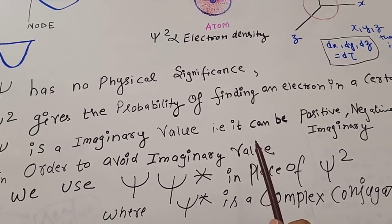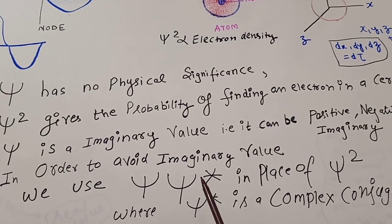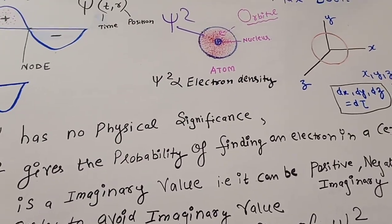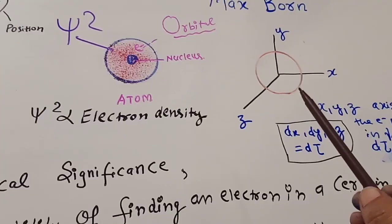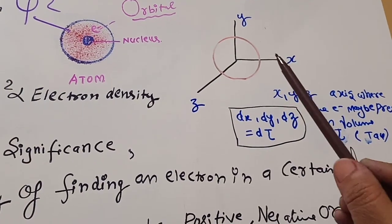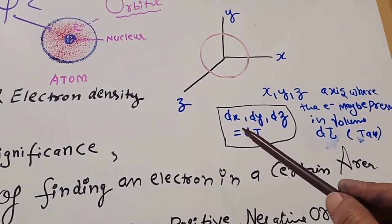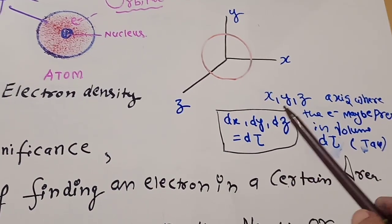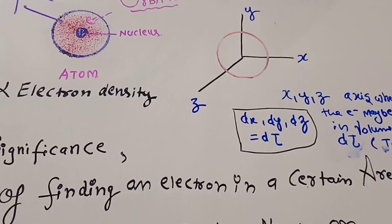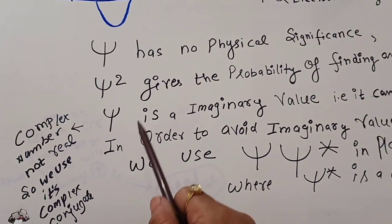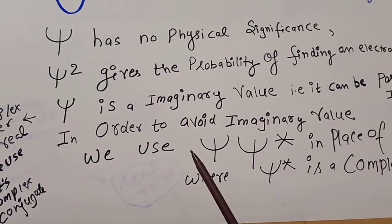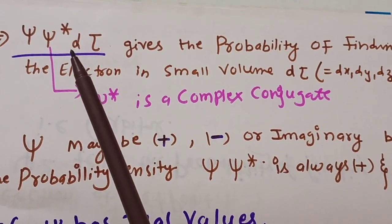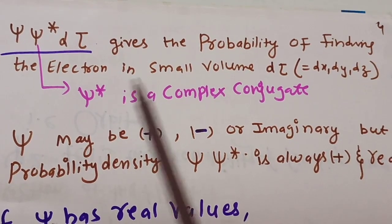To avoid imaginary values, we use psi and psi-star, where psi-star is the complex conjugate of psi. If the electron is present around the nucleus in a three-dimensional area, and the electron is placed in a small volume in space — that is dτ, where dτ equals dx·dy·dz — this dτ is a small area around the nucleus where the electron can be present. As psi is a complex number and not real, we use its complex conjugate, so psi·psi-star·dτ gives the probability of finding the electron in the small volume dτ.